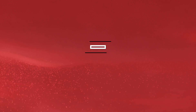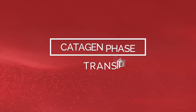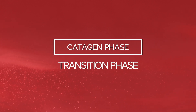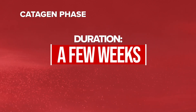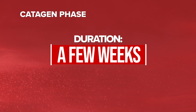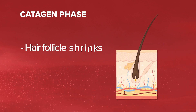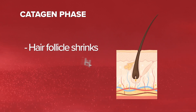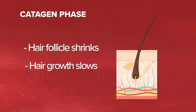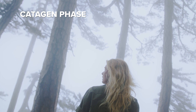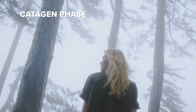Next comes the catagen phase, the transition phase, which lasts for a few weeks. During this time, the hair follicle starts to shrink and hair growth slows down. It's like a brief pause before moving to the next phase.